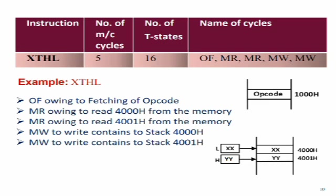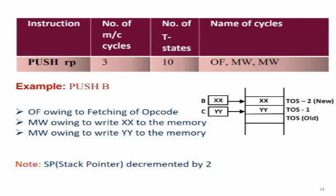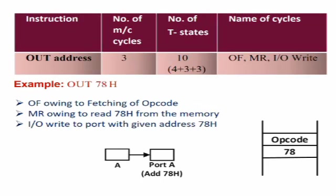Next instruction is PUSH RP — this instruction will push the contents of the register pair onto the stack. For example, let us consider the PUSH B instruction; it will put the contents of register pair BC onto the stack. It requires 3 number of machine cycles: first is opcode fetch owing to fetching of opcode; second is memory write owing to writing of data from register B to the memory; and another memory write owing to writing of data from register C to the memory. The stack pointer in this case will be decremented by 2.